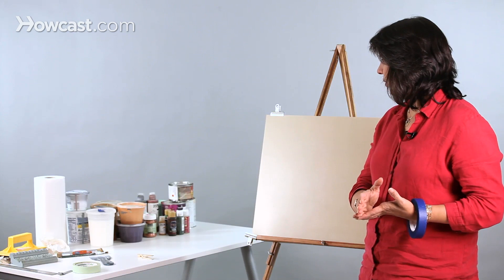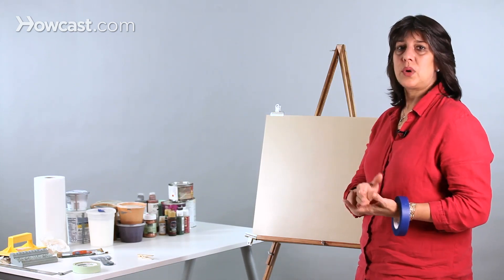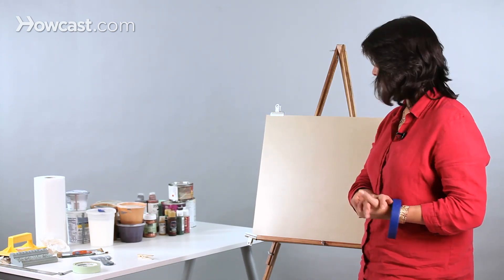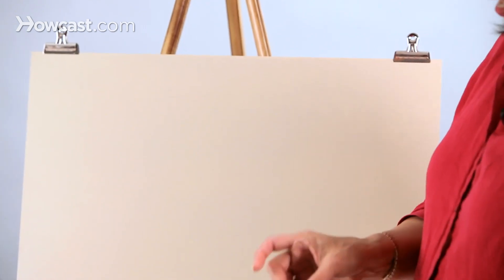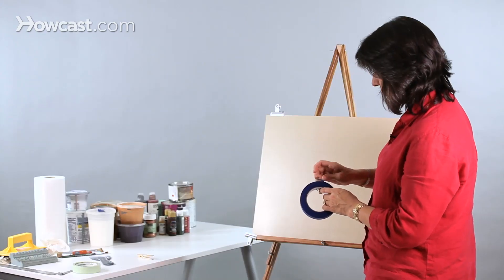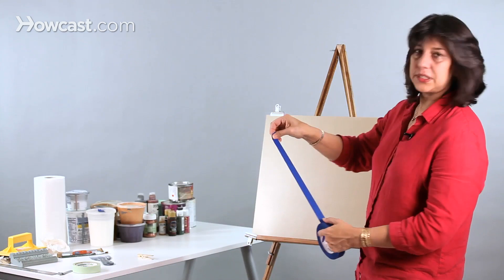They're also called self-stripes as well as tone-on-tone stripes. I have marked out on my board four-inch intervals and I will now proceed to tape these.